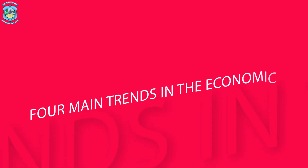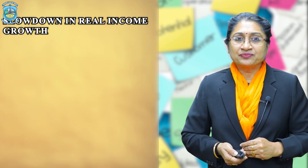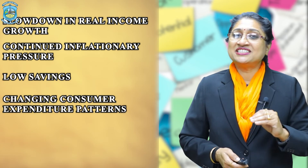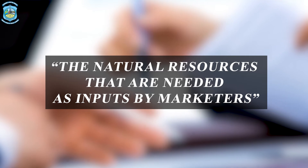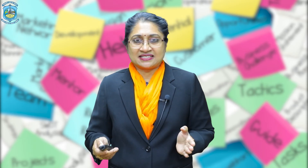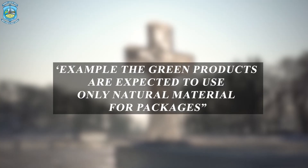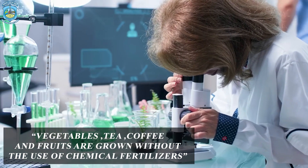Marketers should be aware of four main trends in the economic environment: the slowdown in real income growth, continued inflationary pressure, low savings and changing consumer expenditure patterns. The natural environment involves the natural resources that are needed as inputs by marketers, and environmental concerns have been growing steadily in recent times. As an offshoot, the green marketing trend has started. For example, green products are expected to use only natural materials for packages, use of recycled paper is a part of green initiatives, and organic cultivation — growing vegetables, coffee, tea and fruits without chemical fertilizers and pesticides — is part of the green movement.